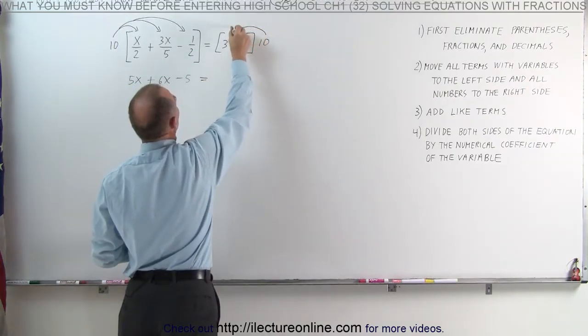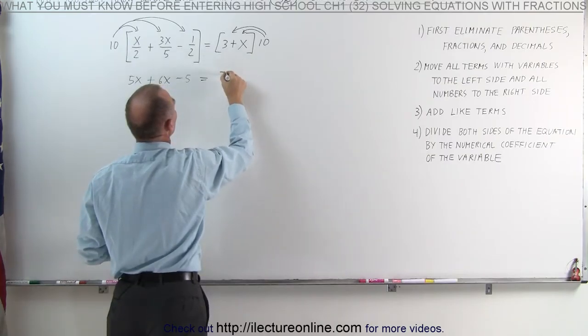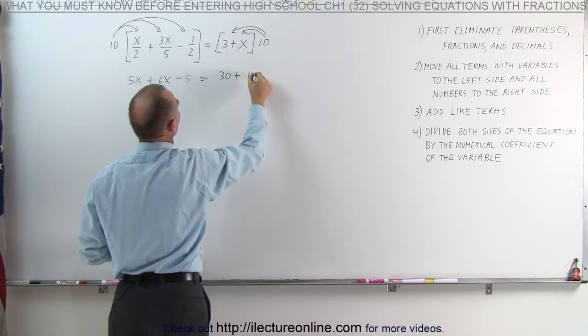Here we're going to multiply 10 times 3 and 10 times x. 10 times 3 is 30, plus 10 times x is 10x.